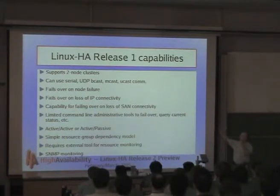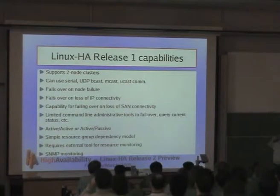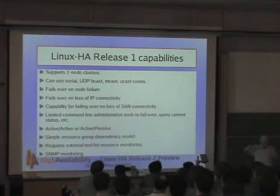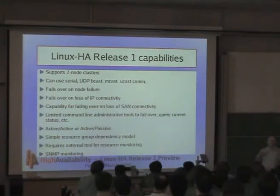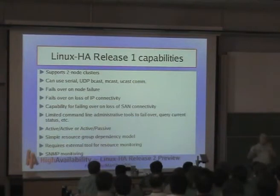It knows when nodes fail and fails over services. It can use various communication methods and detect loss of connectivity to the outside world. You can set it up as active-active or active-passive. Most deployments are two-node clusters because people understand them — there are only two possibilities: either they're both up or only one is up. With active-passive, everything is running on one machine or everything is running on the other. People like those things because complexity is the enemy of reliability.